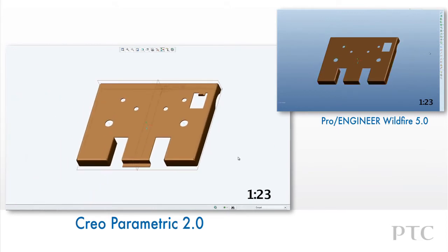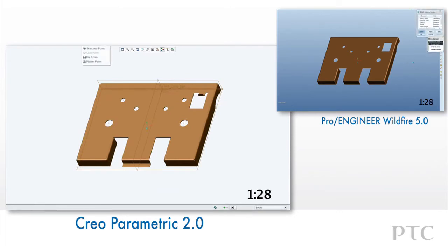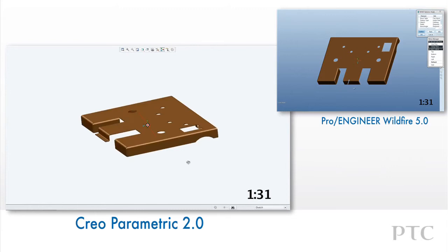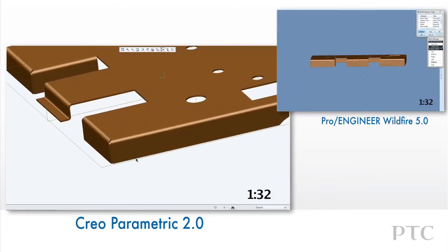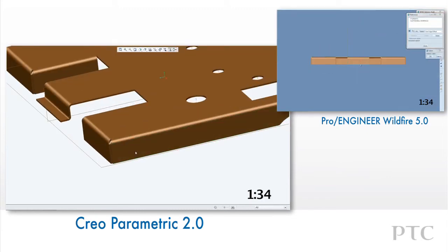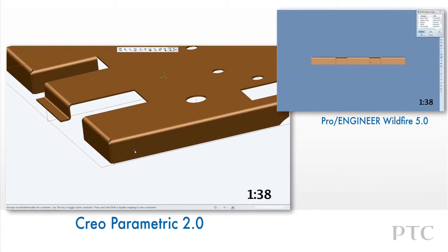We can also create sketched forms in Creo Parametric. In this case, we can sketch a circle and set this form to be a partial piercing. This will automatically offset the section without having to place a form in the desired location using assembly constraints.